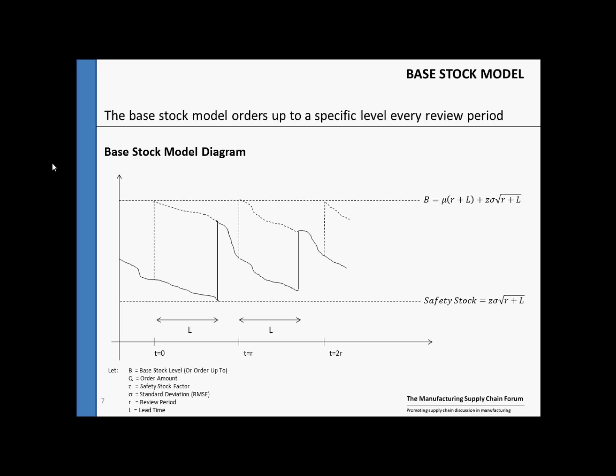Our top dotted line is known as the base stock level. This is given by B, where our base stock is equal to the mean demand mu times R plus L plus the safety stock Z sigma square root of R plus L. Once again, the bottom dotted line is the safety stock. This is given by Z sigma square root of R plus L.